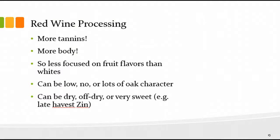Let's talk about red wine processing. Red wines have more tannin, more body. We're less focused on fruit flavors oftentimes than with whites because of the tannin and body — there are different characters we get to play with. We can make reds with low, no, or lots of oak character, and they can be dry, off-dry, or very sweet, though they're usually dry. We can make something like late harvest Zin and make it very sweet.